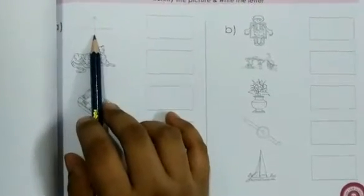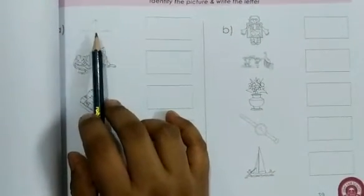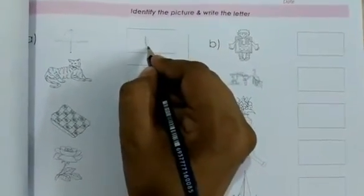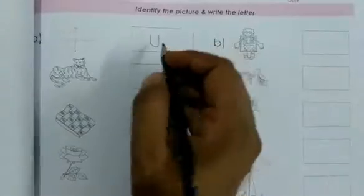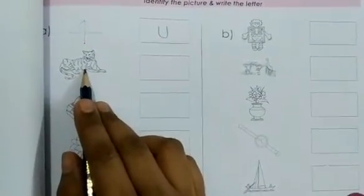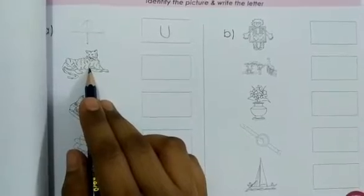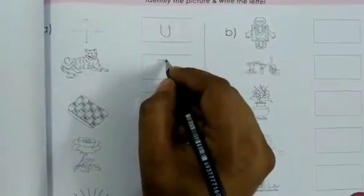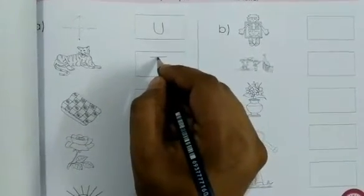Do you know what is this? This is Umbrella. U for Umbrella. Isn't it? This is U. What is this? This is Tiger. You'll write here T. T for Tiger.